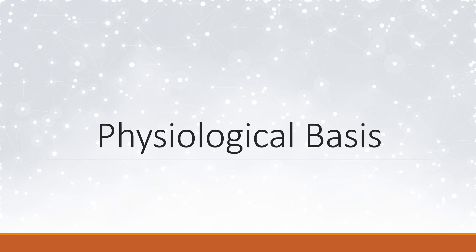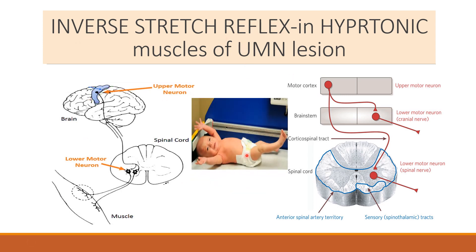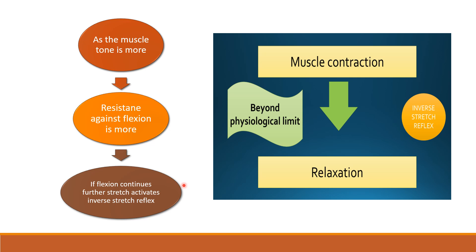What is the physiological basis of this clasp knife spasticity in upper motor neuron lesion? Physiologically, clasp knife spasticity can be explained on the concept of the inverse stretch reflex. The inverse stretch reflex is the cause and can explain the pathophysiology of clasp knife spasticity in upper motor neuron lesion. From our knowledge of stretch reflex and inverse stretch reflex, we know that if a muscle is stretched up to a physiological limit there will be contraction of the muscle — this is the stretch reflex. But if the muscle stretching goes beyond the physiological limit, instead of contraction there will be relaxation of the muscle, and this is done by the inverse stretch reflex.